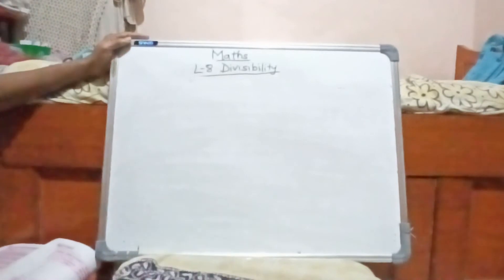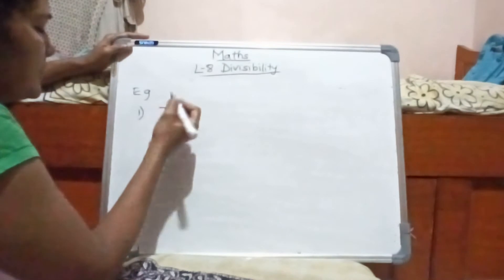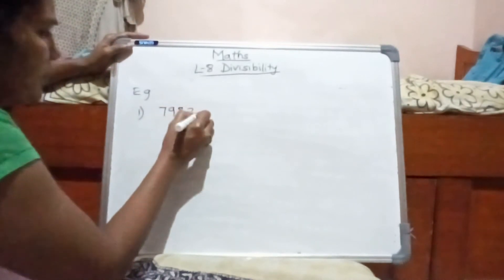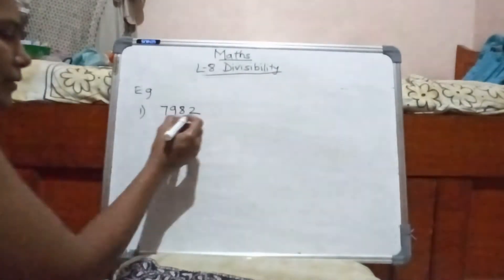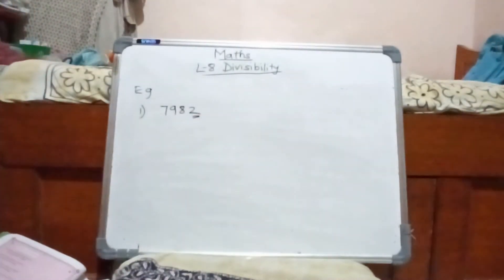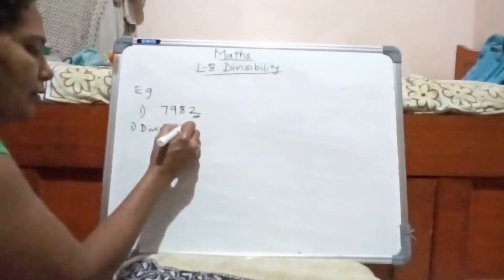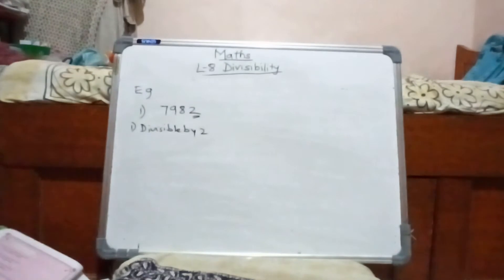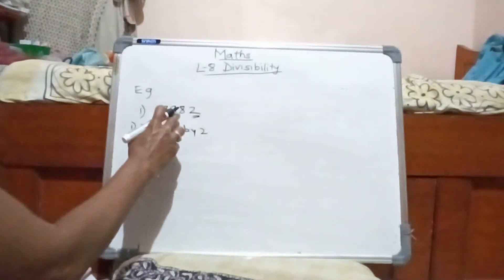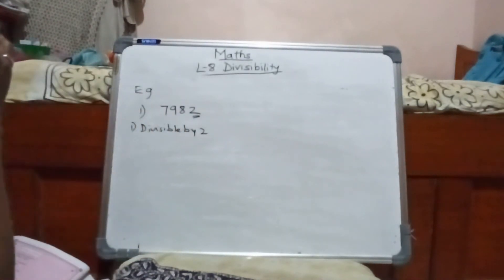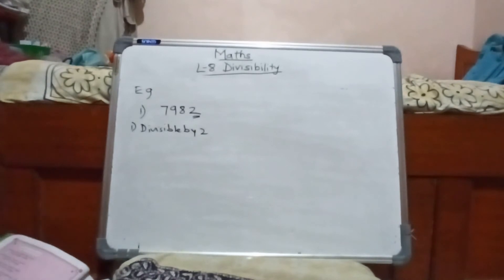So randomly we will take any one number as an example, and we will see which numbers it is divisible by. In the unit place there is 2, so this number is divisible by 2. Now whether it is divisible by 3 or not, we add the digits: 8 plus 2 is 10, 10 plus 9 is 19, 19 plus 7 gives us 26.